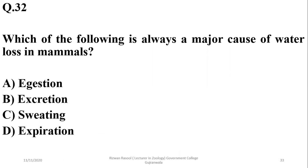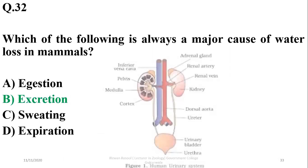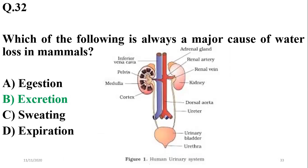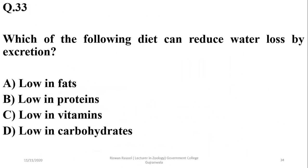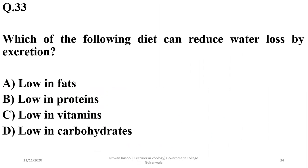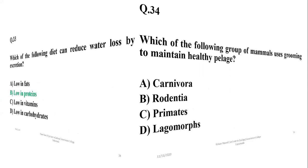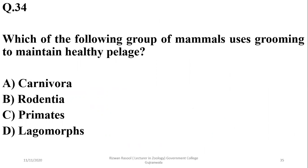Question 31: Which of the following is always a major cause of water loss in mammals? Although digestion, sweating, and expiration all cause water loss, the major route is always excretion. Question 32: Which diet can reduce water loss by excretion? A diet low in proteins will cause low production of urea and hence a low amount of water is excreted.